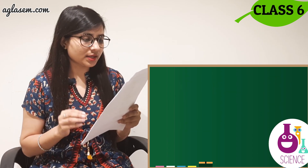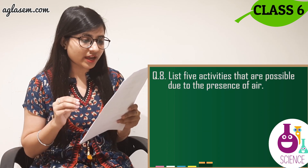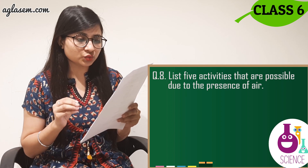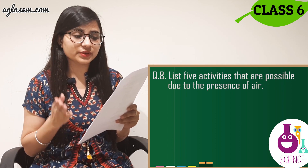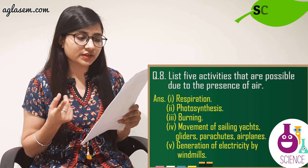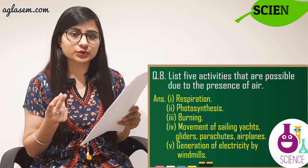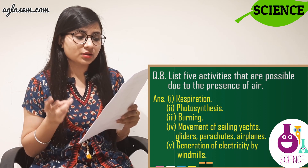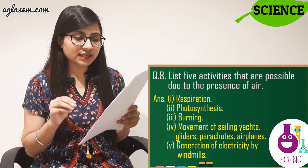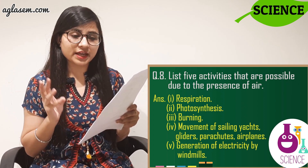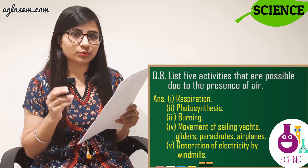Question number 8: List 5 activities that are possible due to the presence of air. The answer is: respiration, photosynthesis, burning, movement of sailing boats, gliders, parachutes, and aeroplanes.